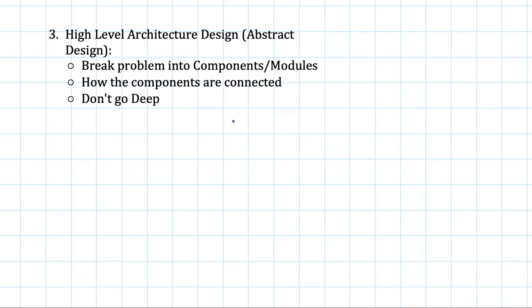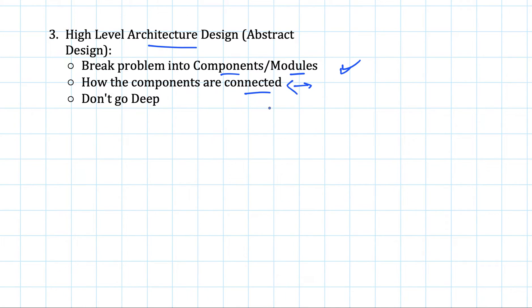Once you have clarified the problem, you should start drawing the high level architecture design of the application. You should not straight away go into the detail of individual components — first you should come up with a high level design, breaking the problem into components or modules, how these components are connected, and how they communicate with each other.